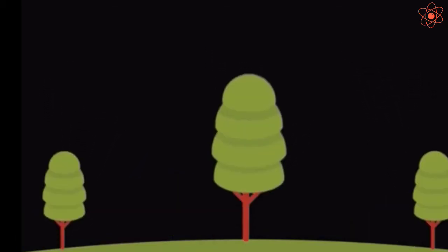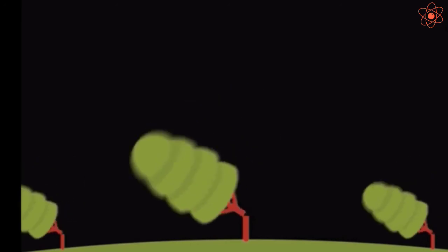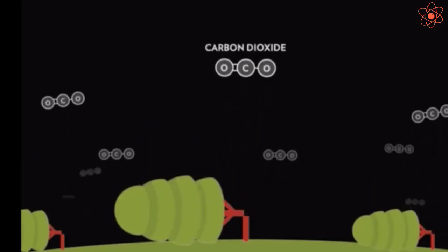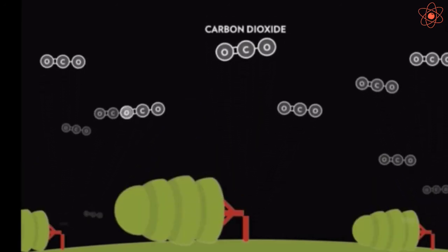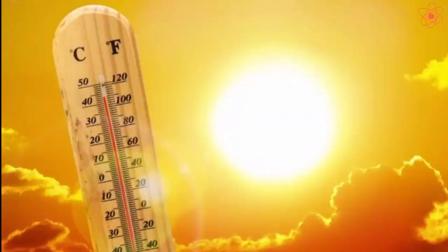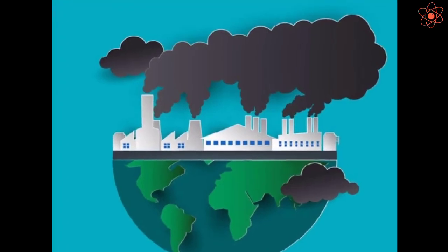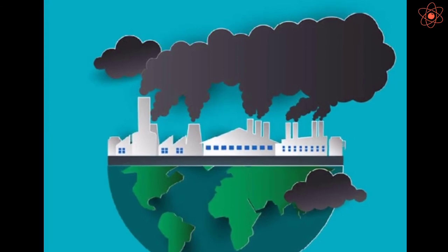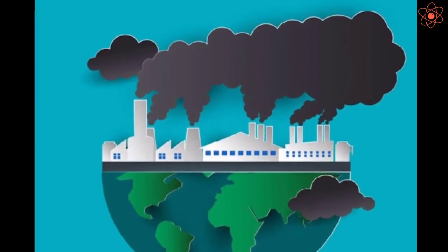Sixth, deforestation leads to increased levels of carbon dioxide in the atmosphere. Carbon dioxide, being a greenhouse gas, traps the heat of sun rays and increases the temperature of the earth. Hence, deforestation causes global warming.